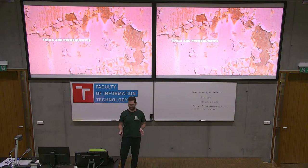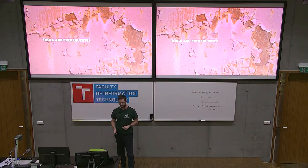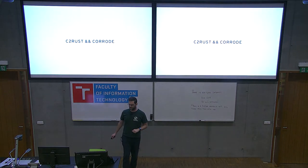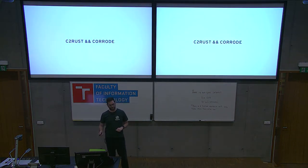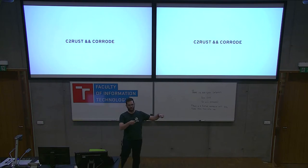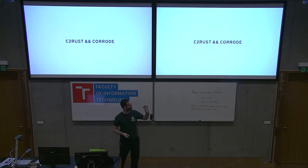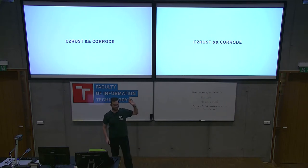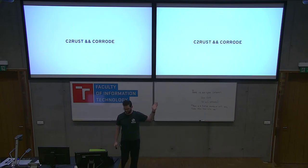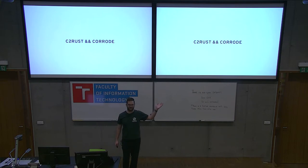There are some tools that can help you rewrite stuff in Rust. There's C2Rust and there's Coroad. Both take C code and give you Rust code that does the same thing. For C2Rust there's a web interface and a command-line tool. Coroad is a CLI tool — it's actually interesting because it's written in literate Haskell.